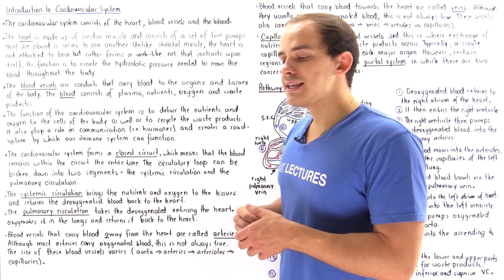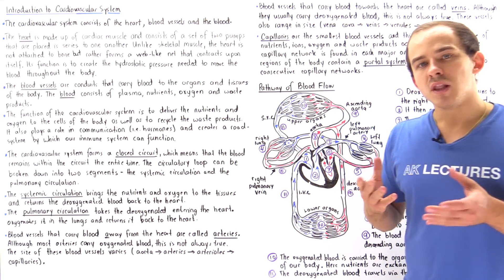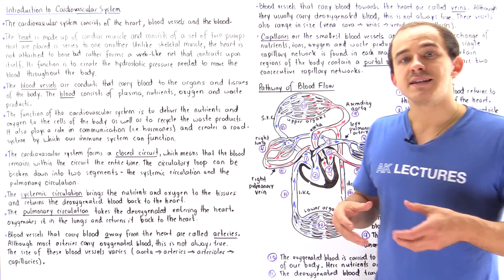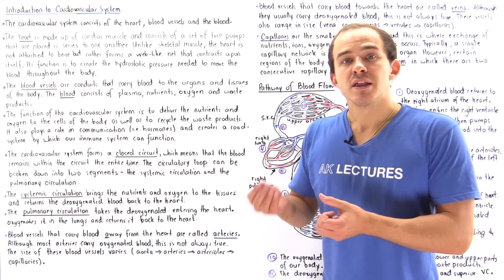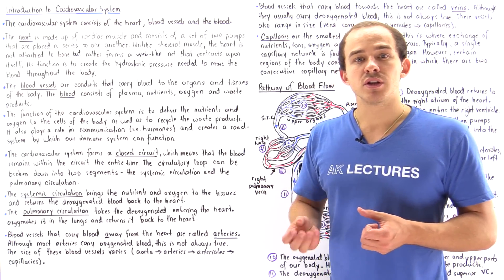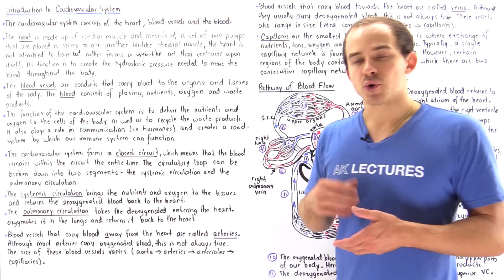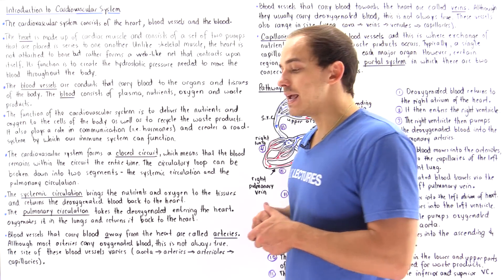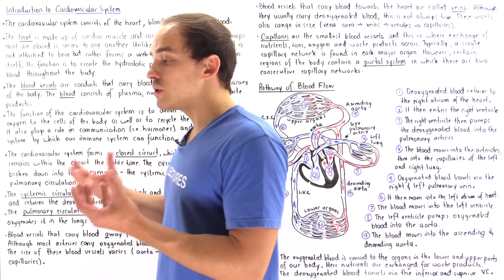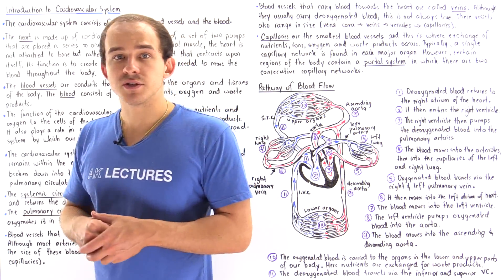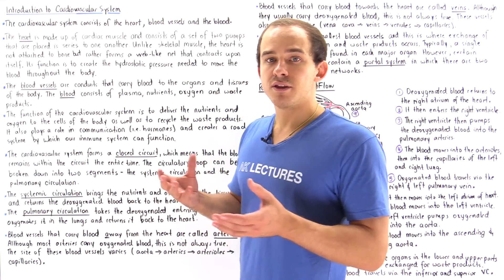What exactly is a blood vessel? Well, a blood vessel is a conduit — it's a pipe that essentially allows the movement, the flow of blood through our body.